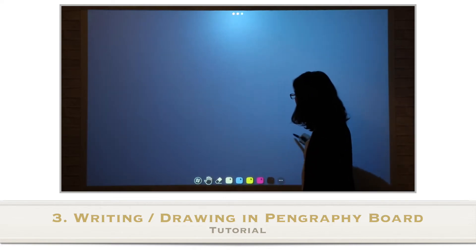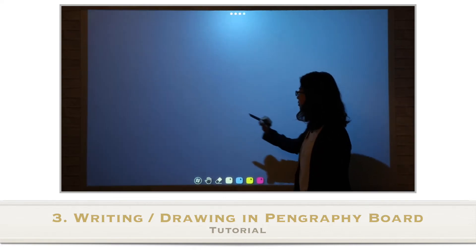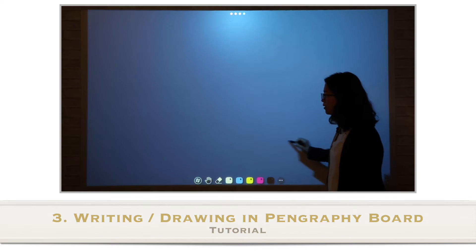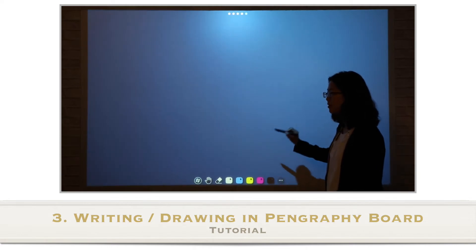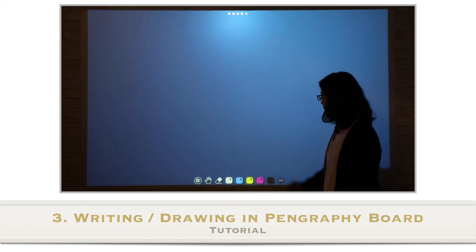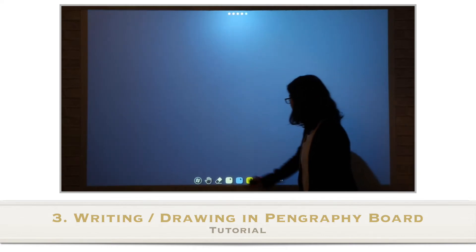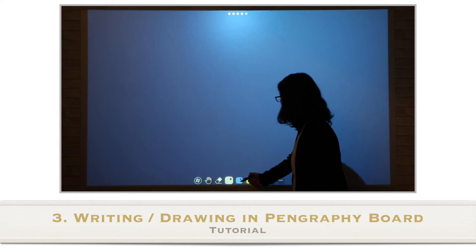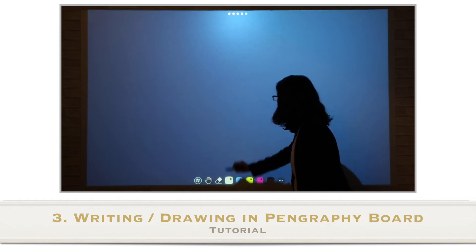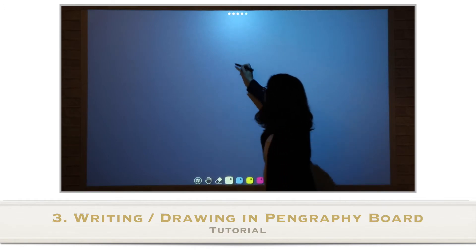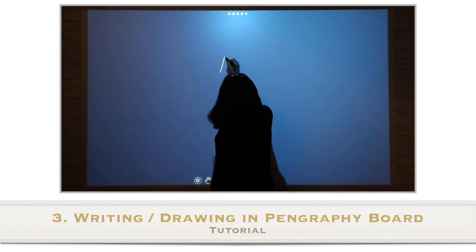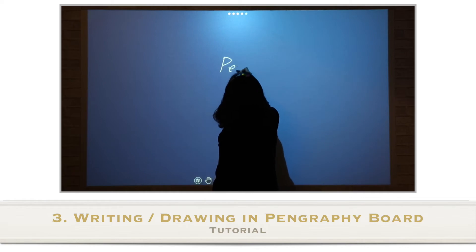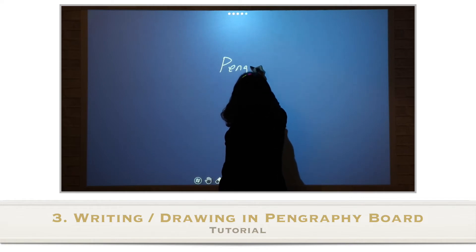The hand icon enables you to create a new page by dragging left to the right. Now, you can select your pen color by touching the color icons. You can write anything with the color you selected.